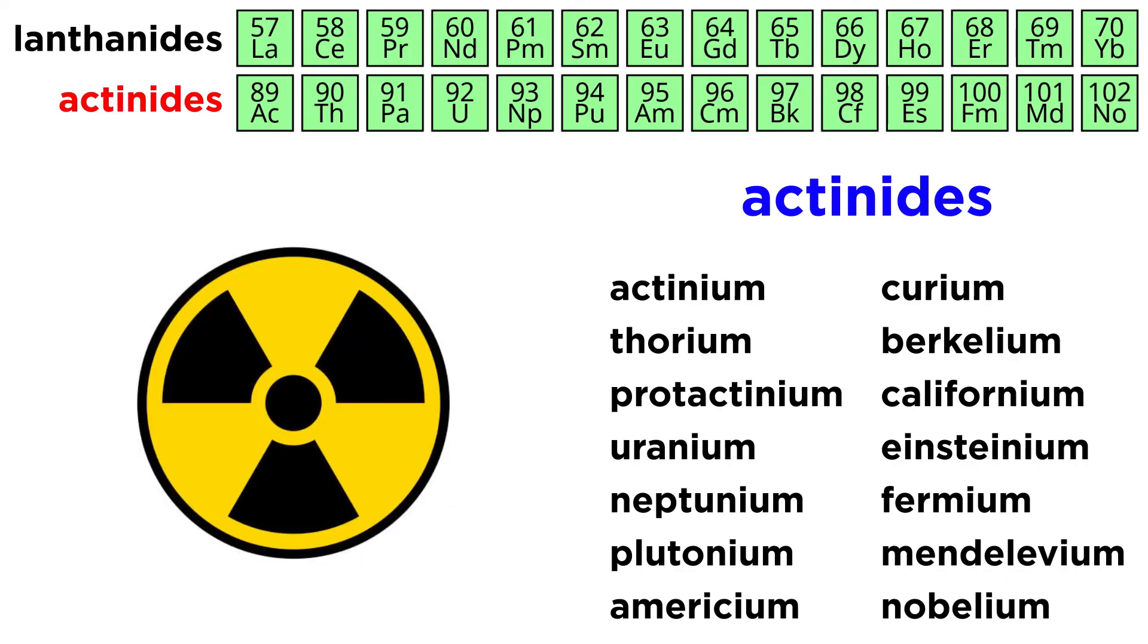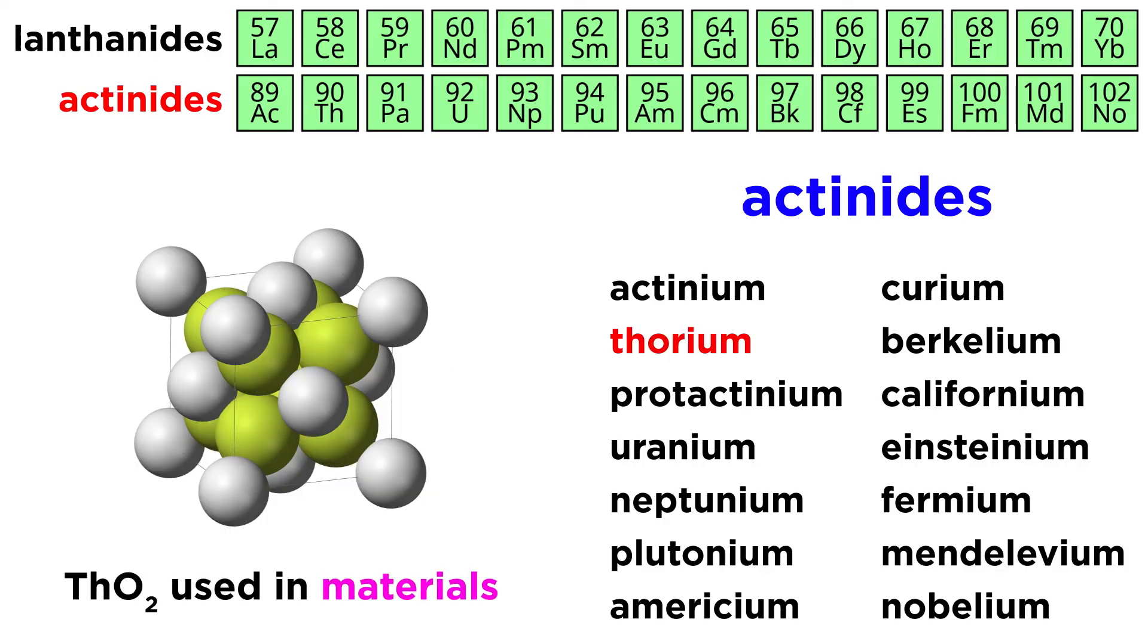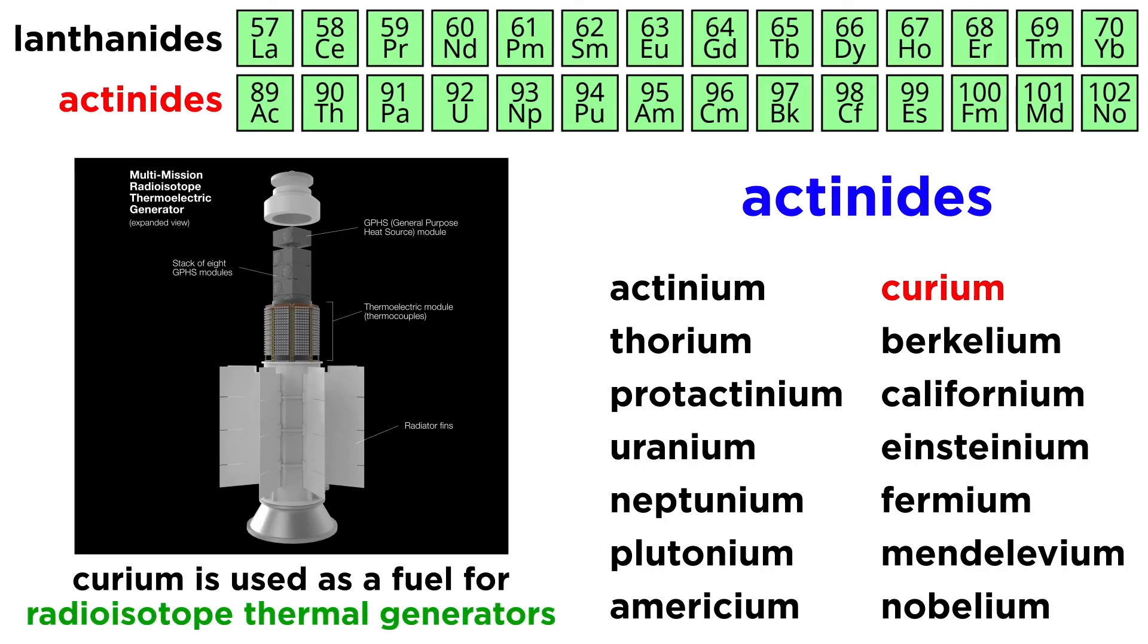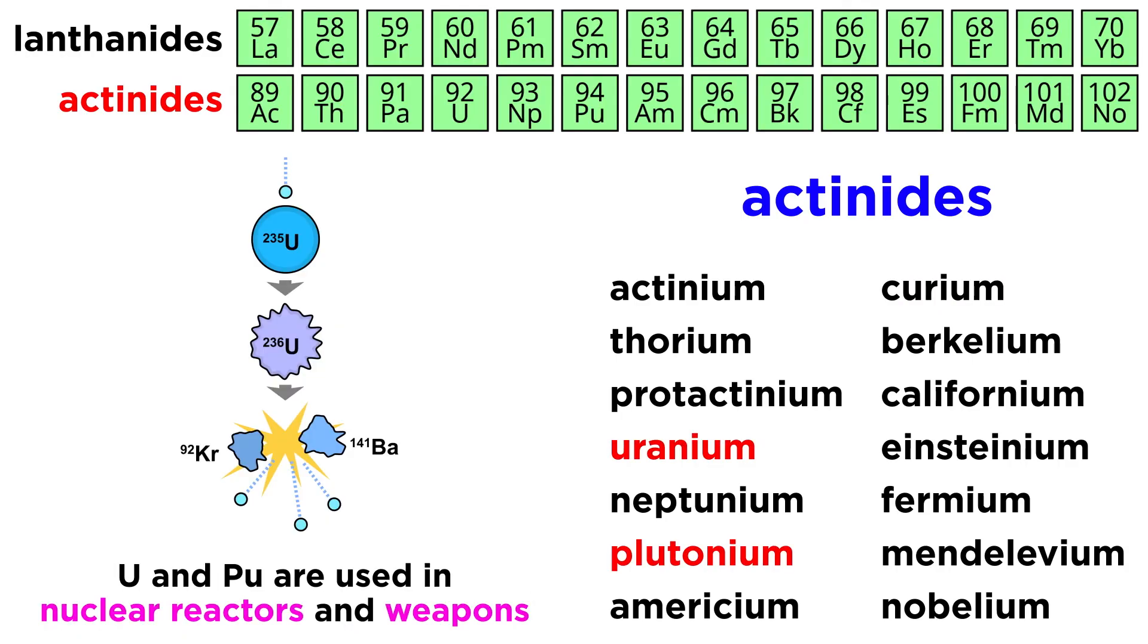These elements are very heavy, and most are extremely radioactive, but some still have utility. Thorium oxide is used in a number of materials. Curium is used as a fuel for radioisotope thermal generators, and of course we all know of the usage of uranium and plutonium in nuclear reactors and weapons.